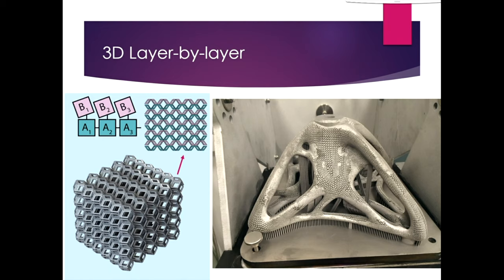That means we can make structures like the one on the right, which is a bracket where the strength has been optimized while still keeping the weight low. If you look carefully, you'll be able to see that there's a mesh structure in this bracket, and this means that it has the same strength as a conventional bracket, but it is able to perform with a much, much lower weight.